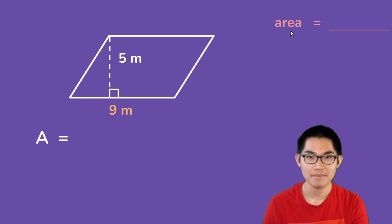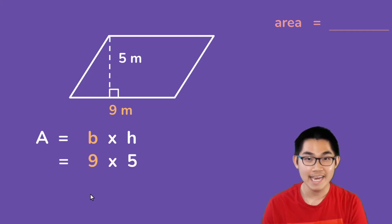And remember, the area is the base times the height, and we know that this is the base which is 9 meters, and the height is 5 meters, so the area is 9 times 5 which is equal to 45 meters squared. And so the area of this parallelogram is 45 meters squared.